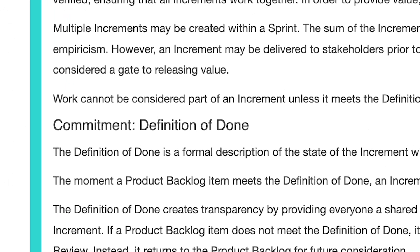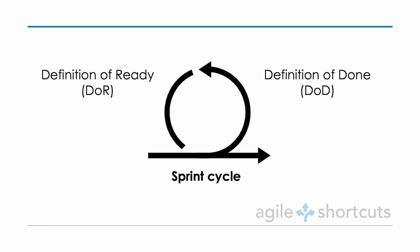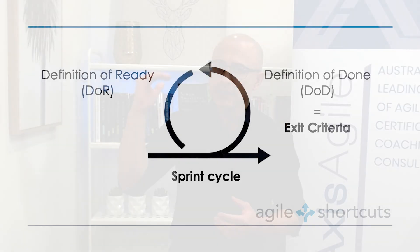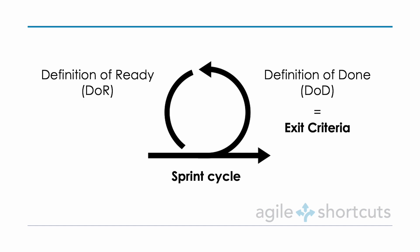Don't confuse the Definition of Ready with the Definition of Done, which is part of core Scrum, appears in the Scrum Guide, and is not optional. The way to describe them is that these two artifacts sit on either side of our sprint cycle. The Definition of Done specifies the exit criteria — the quality that needs to be met for something to exit our sprint cycle. The Definition of Ready, on the other hand, specifies the entry criteria.